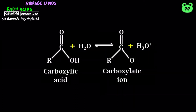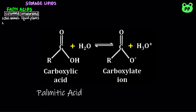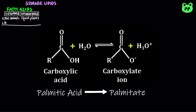Note that most fatty acids alternate between the acid form, which ends in '-ic acid', and the salt form, which ends in '-ate'. For example, palmitic acid is the acid form, whereas palmitate is the deprotonated salt anion form. In this video, I'll mostly write them in their anion form since they're shorter.